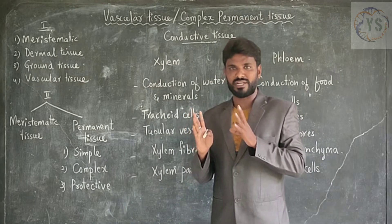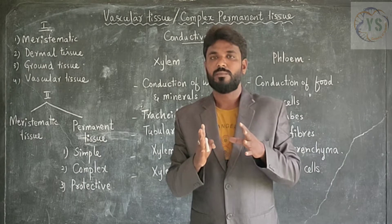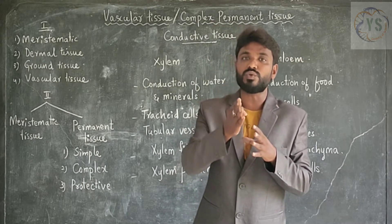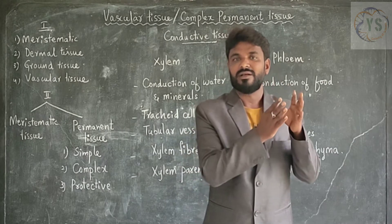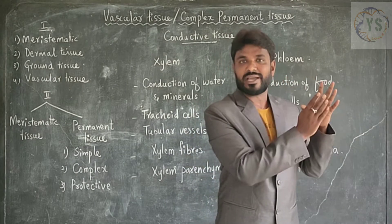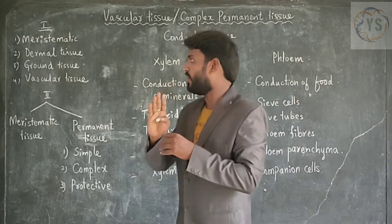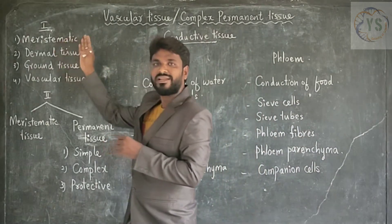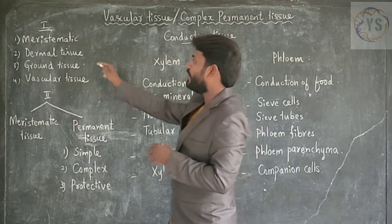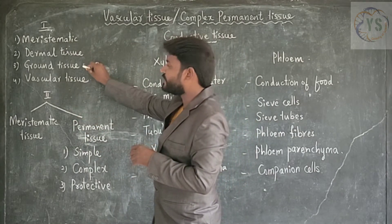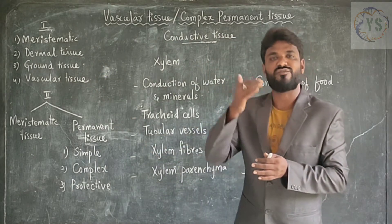In plants, generally some tissues are present, and these tissues are classified into groups. The classification of plant tissues is done in two methods. In the first method, plant tissues are divided into four kinds: meristematic tissue, dermal tissue, ground tissue, and vascular tissue.